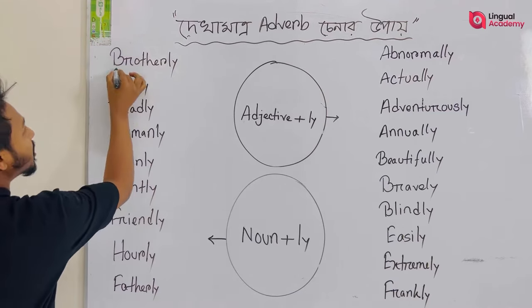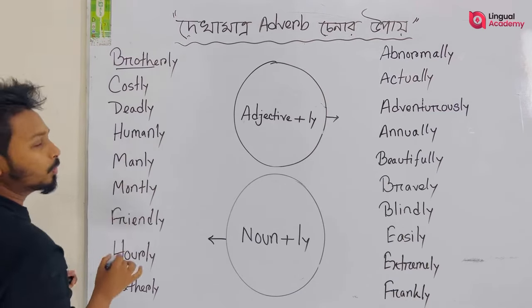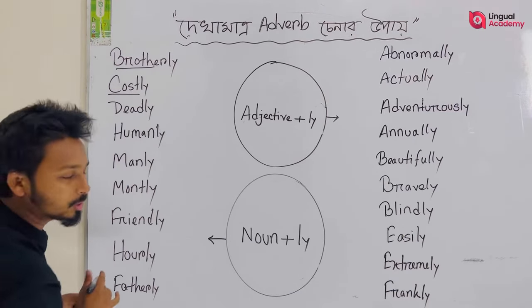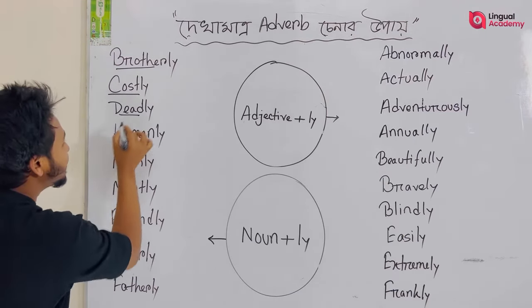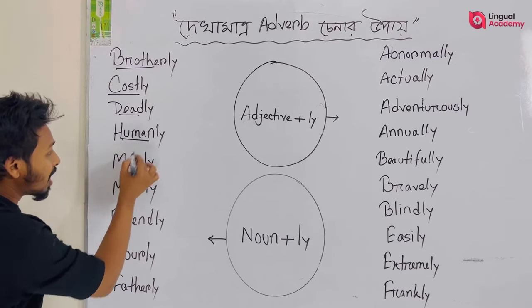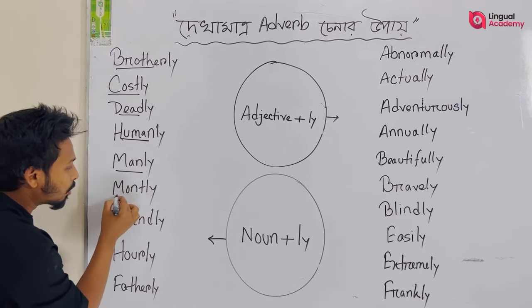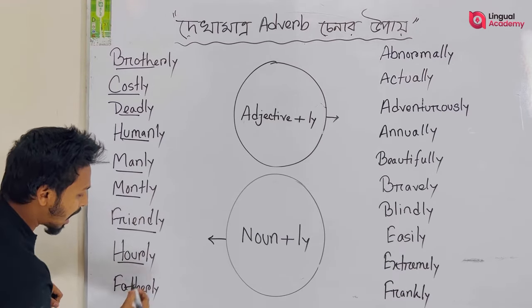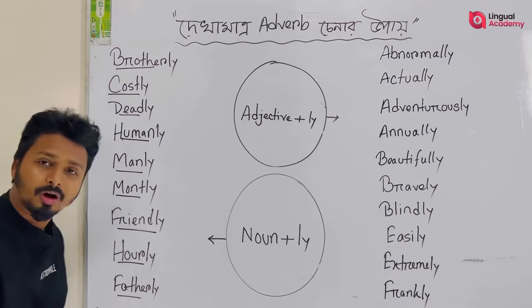Which is that: brother — detect a noun. A cause — detect a noun. A date — detect a noun. Human — noun. Man — noun. Month — noun. Friend — noun. Hour. Even father.